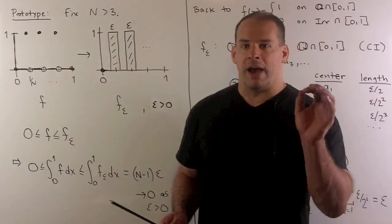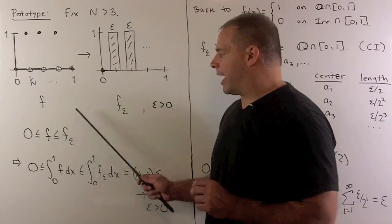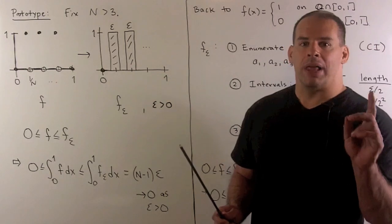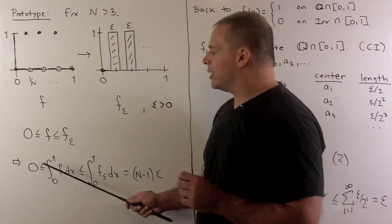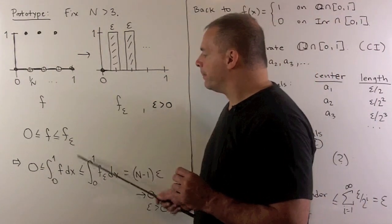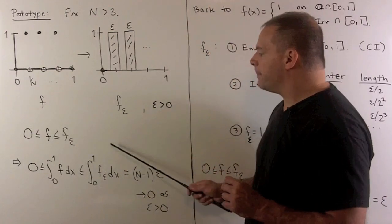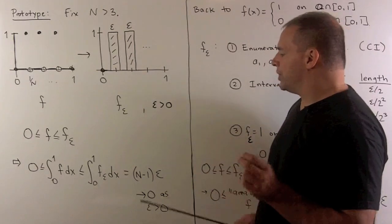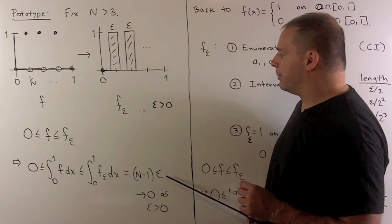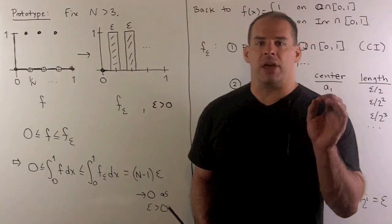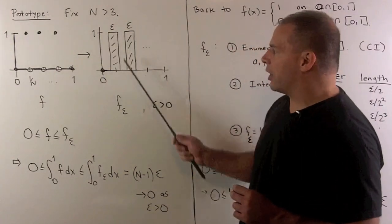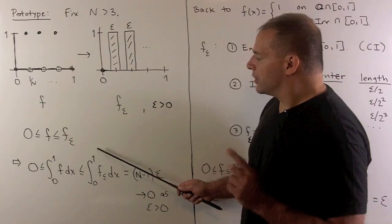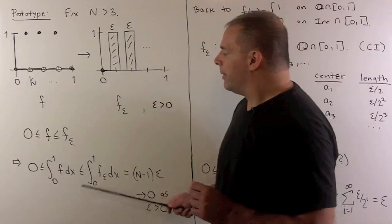We have zero is less than or equal to f, which is less than or equal to f sub epsilon. These functions are Riemann integrable, so applying the inequalities rule, zero is less than or equal to the integral of f, which is less than or equal to the integral of f sub epsilon. This computes to the sum of the areas of the rectangles, equal to n minus one times epsilon. If we let epsilon go to zero, making these rectangles thinner and thinner, this integral goes to zero, so our integral in the middle must be equal to zero.